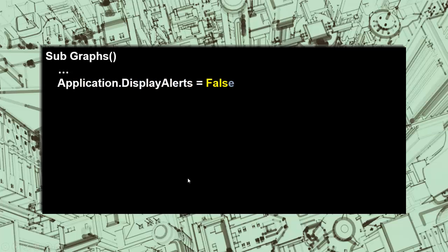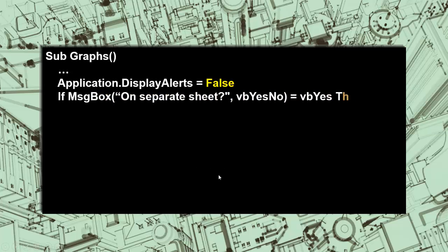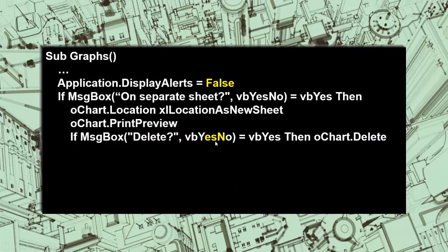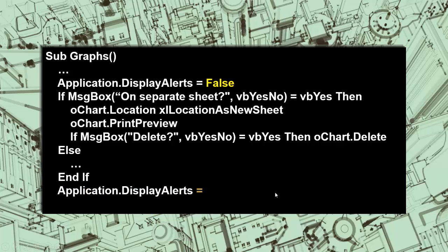We set DisplayAlerts to False, then ask: do you want it on a separate sheet? If yes, we put the OChart location on a new sheet, create a print preview, and if they want to delete the chart we say OChart.Delete. Otherwise, if they don't want it on a separate sheet, we put it on the same sheet as the database. Don't forget to set DisplayAlerts back to True before the Else clause.